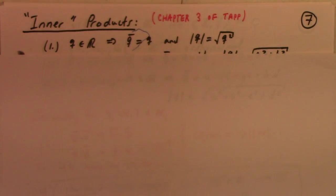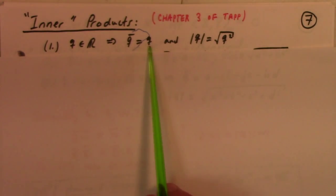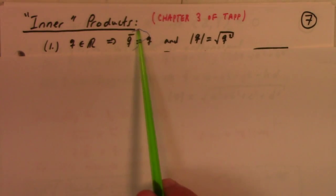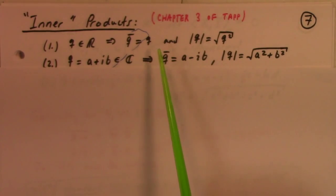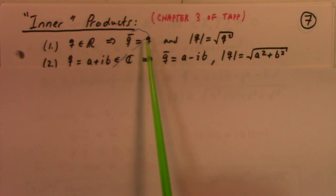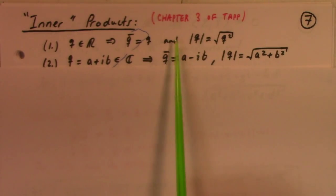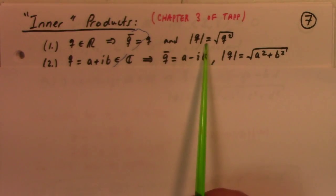A lot of it's based on the notion of conjugation. For the reals, conjugation is kind of boring — you know, absolute values, sum of q squared, but of course that's really q times q-bar if you look at it the right way.